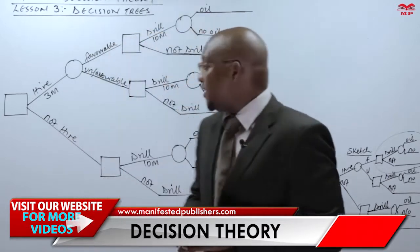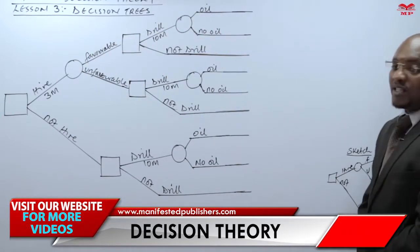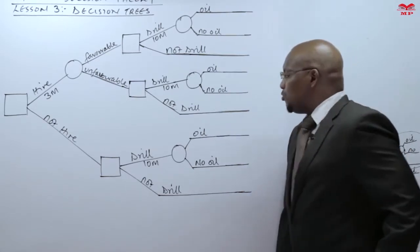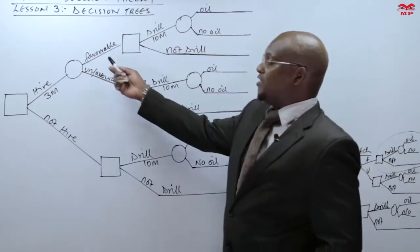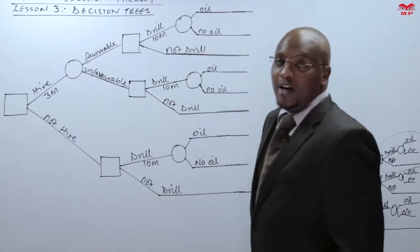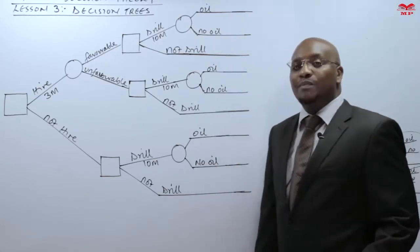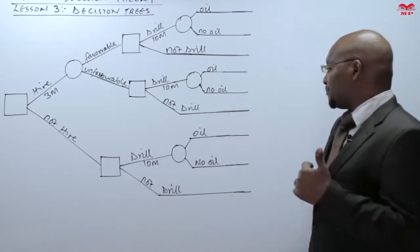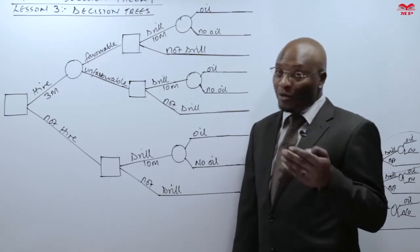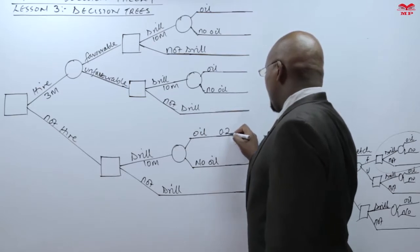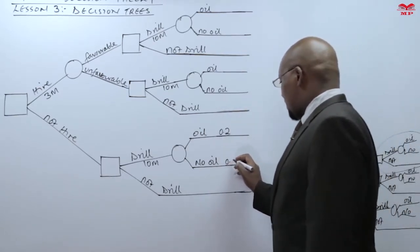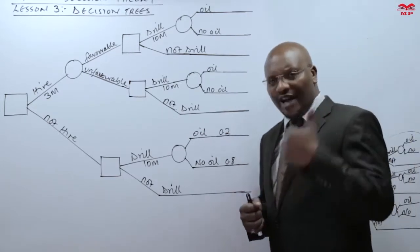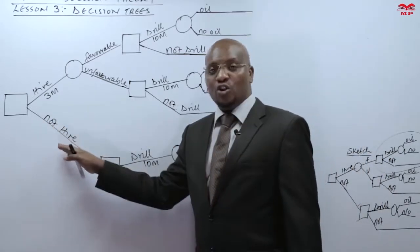Now about the event node — where you have a circle — after a circle we have the outcomes which are actually states of nature, and we require to indicate the probabilities. The only probability we have at the moment, from the chief engineer and from past experience, is the estimate of 0.2 as a probability of oil. So if we drill, there is a 0.2 chance of getting oil and a 0.8 chance of no oil. But we have not yet obtained additional information, which is why I recorded them under the 'not hire' branch.